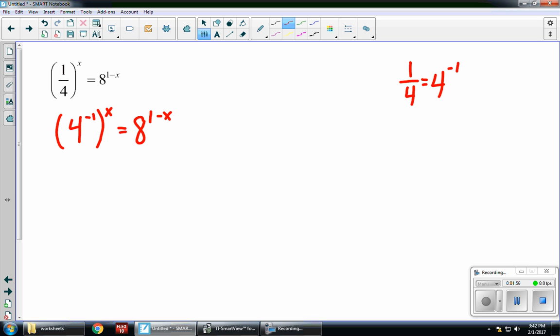So now a power to a power tells me to multiply. So I have 4 to the negative x is equal to 8 to the 1 minus x. I want to get a common base.